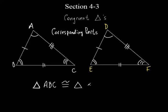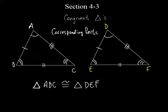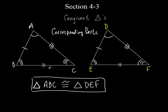So triangle ABC is congruent to triangle - and watch what's got to happen, this is really important. The corresponding parts have to match up. So if I call this triangle ABC, what matches up with the A? The D. So I have to call this one D. Then B is the one with two arcs, so E. And then this is C, so I'd have to call this one F. I will be very picky about that because this tells you a lot of information.